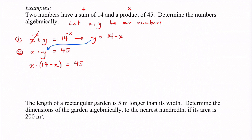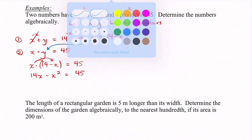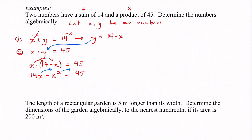To solve this, I'm going to first distribute the x into the brackets, which gives me 14x minus x² equals 45. Then I'm going to move everything to one side — just so that x² is positive, I'll move everything to the other side so all signs change. That gives me x² minus 14x plus 45 equals 0.